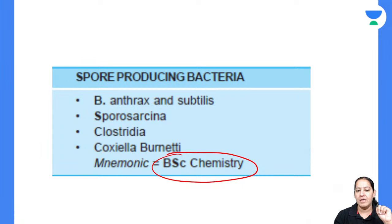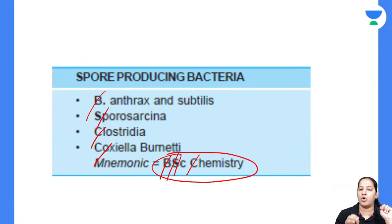There are only four spore-forming bacteria. The mnemonic is BSC Chemistry. B stands for Bacillus (anthrax and subtilis), S is for Sporosarcina, C is for Clostridium, and Chemistry's C is for Coxiella. Since Staphylococcus is not in this mnemonic, it is non-spore-forming.